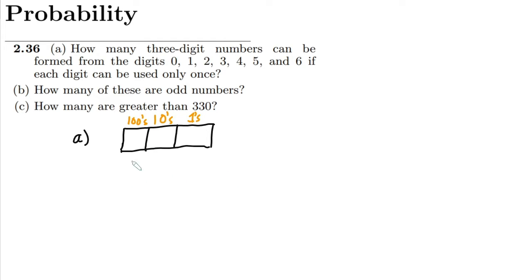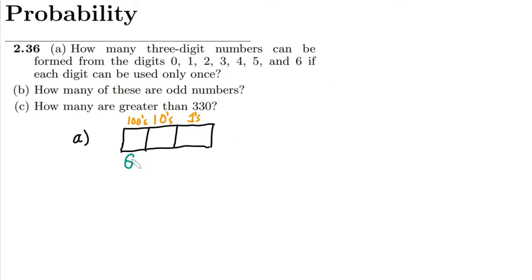Now I have to see how many choices I have in each spot. At the hundreds spot, out of these seven choices I can write any number, but if I write 0 here it won't be a three-digit number — 0 is not counted in the hundreds block for a three-digit number. So I have to exclude it, giving me 6 choices here.